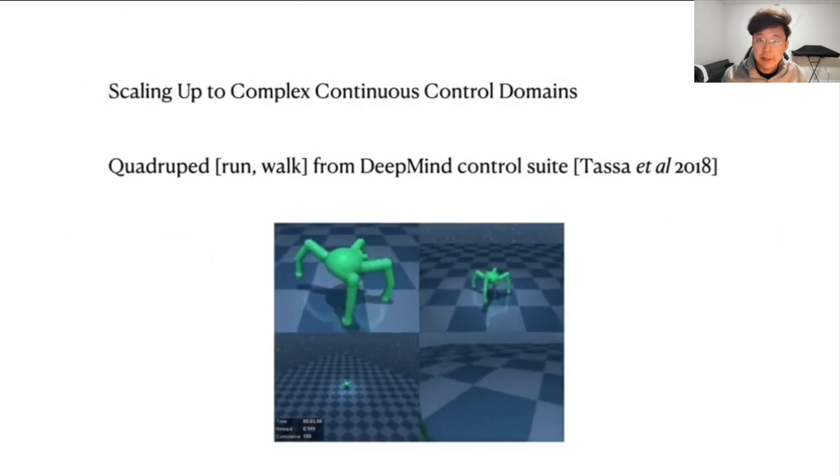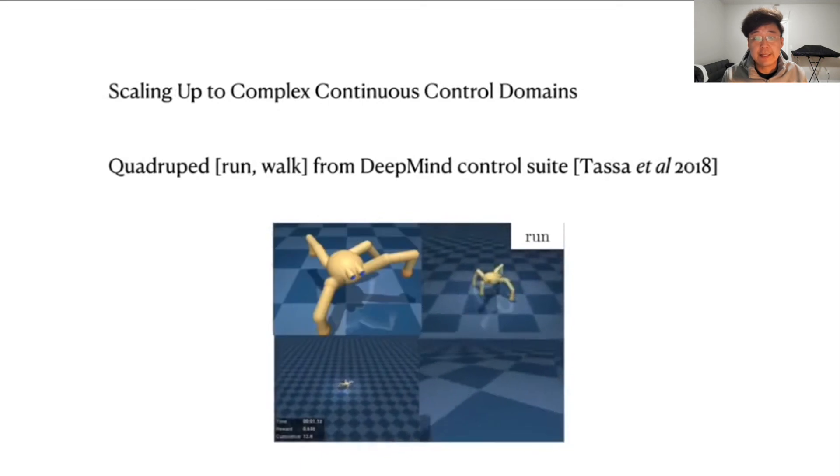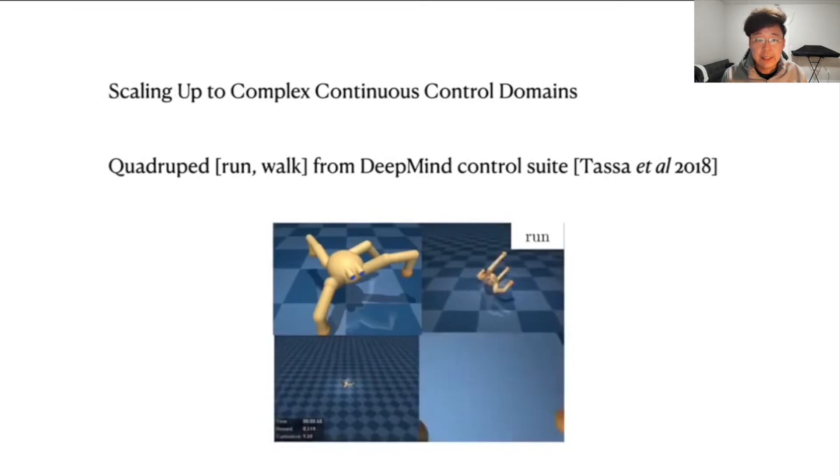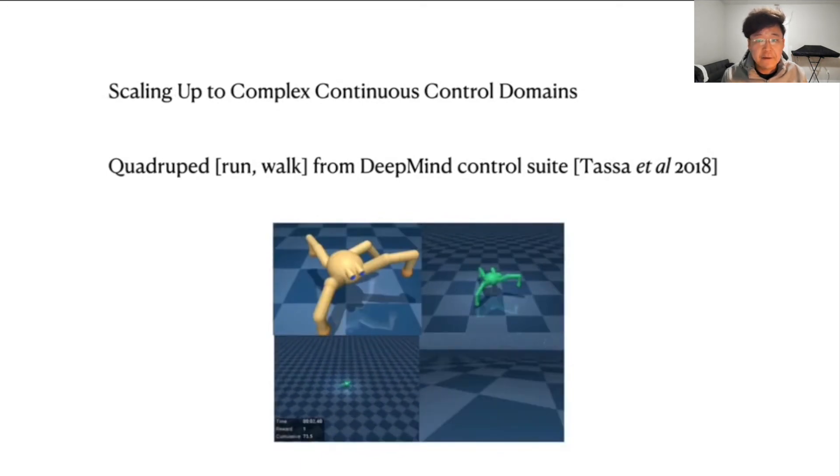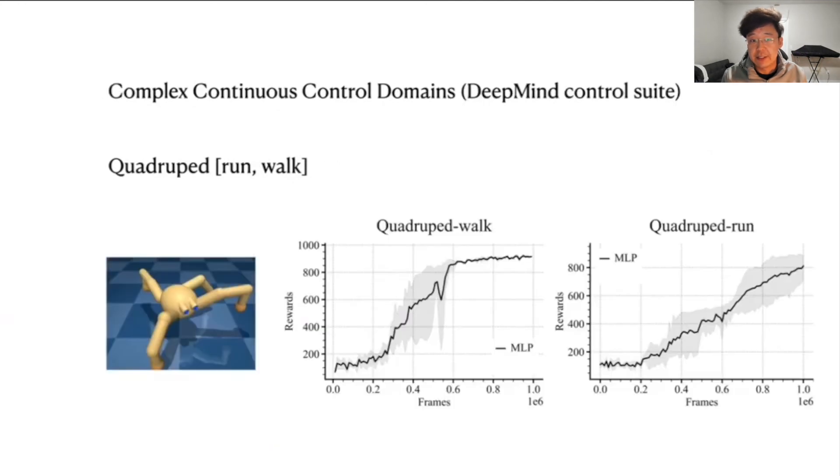In this paper, we also extend our results to complex continuous control domains, including the DeepMind control suite. And what I'm showing here is the quadruped, a difficult domain that has high-dimensional observation and action spaces.